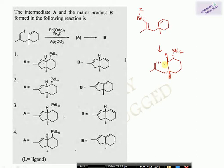The methyl group goes above the plane because this part of the five-membered ring is in the same plane as the palladium complex. Looking at the options, the intermediate in which palladium and hydrogen are in opposite planes (because they attached syn) and the methyl group is above the plane corresponds to option one only.